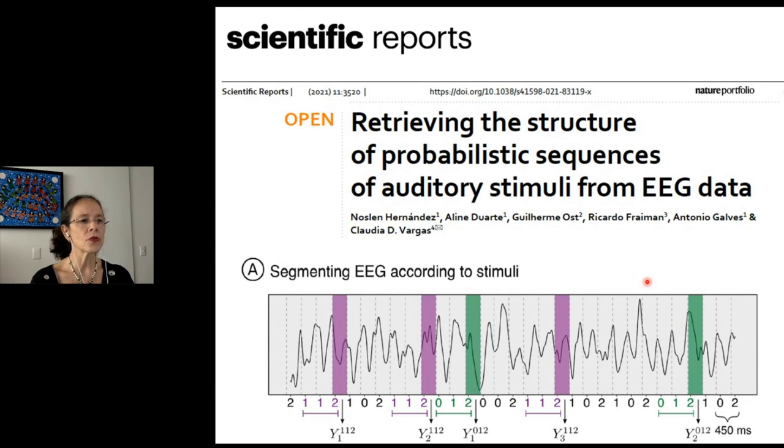For instance, in this figure, the context 112 and its corresponding EEG segment are depicted in purple and the context 012 and its corresponding EEG segment in green. A new statistical analysis was developed to compare the law of the EEG segments as a function of their context. Employing this approach, we were able to retrieve the structure of probabilistic sequences of auditory stimuli from EEG data.